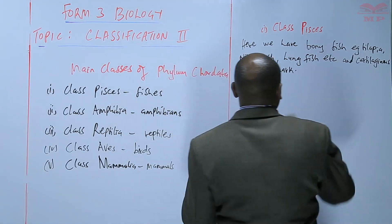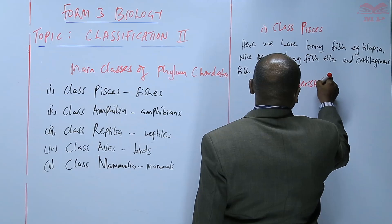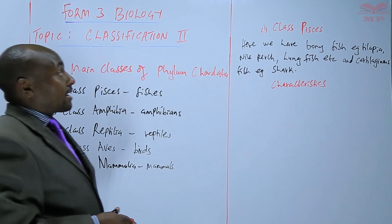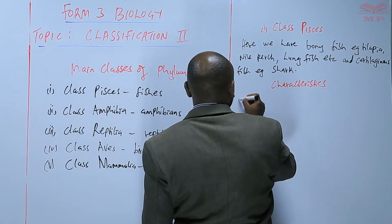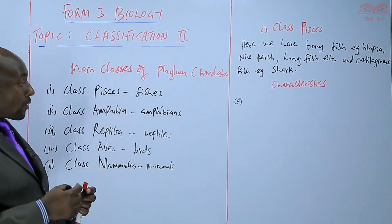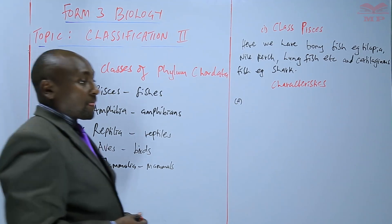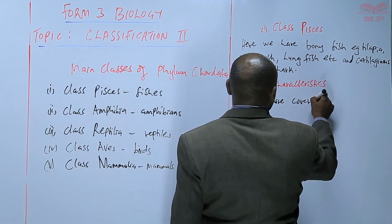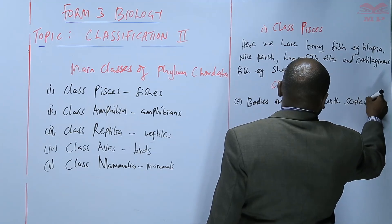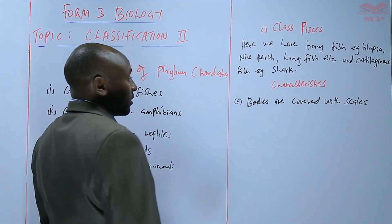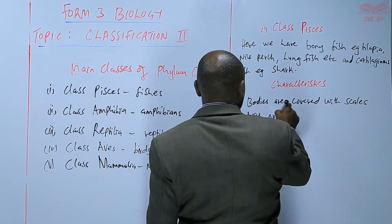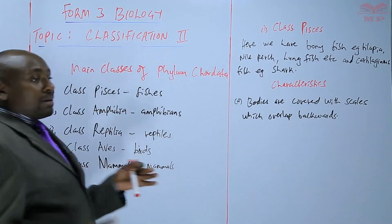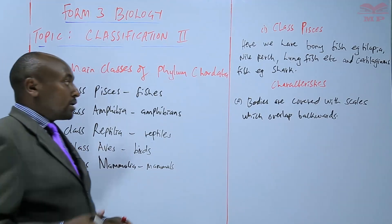The characteristics of the class Pisces. One thing about the fish is that their bodies are covered with scales. Their bodies are covered with scales which overlap backwards.